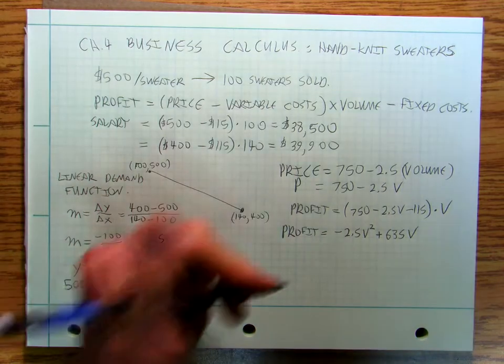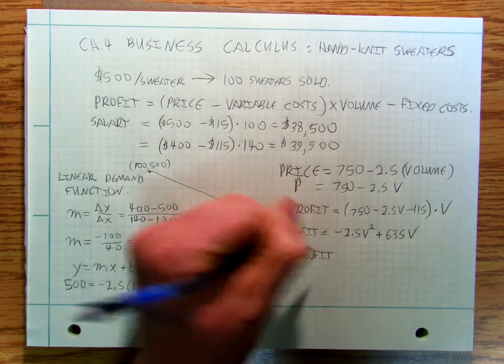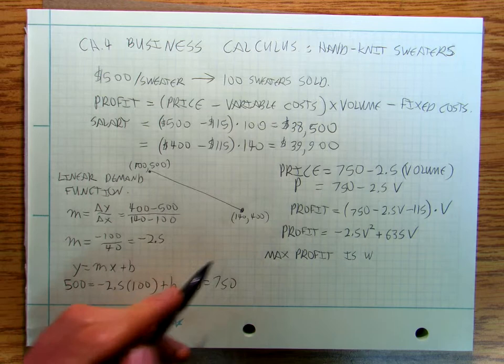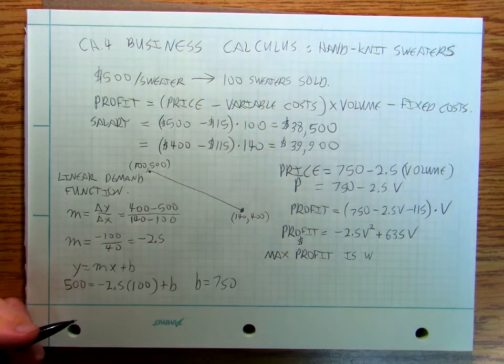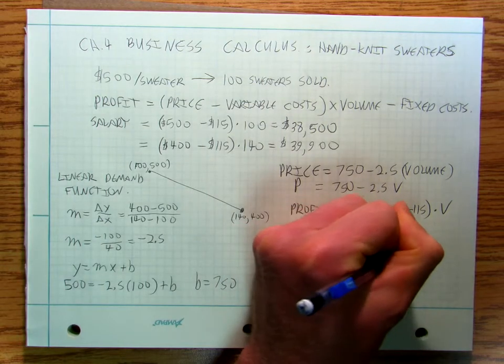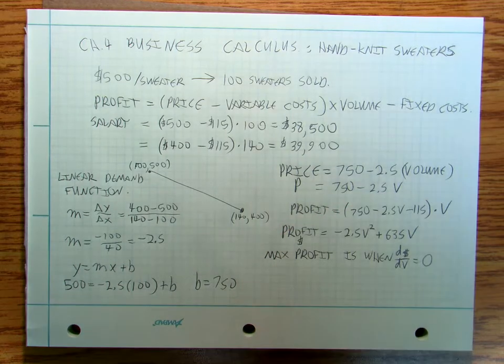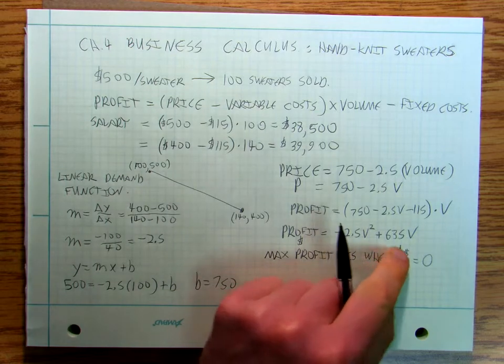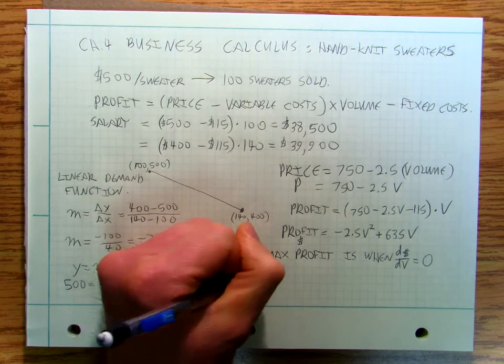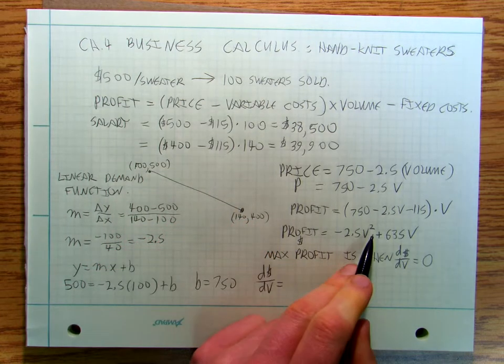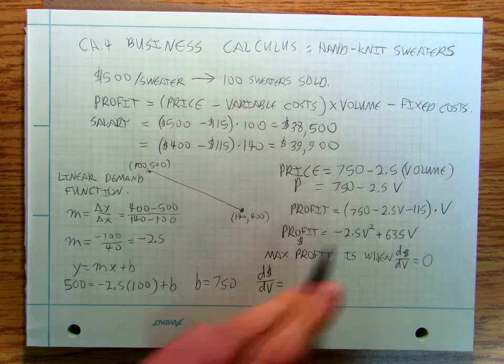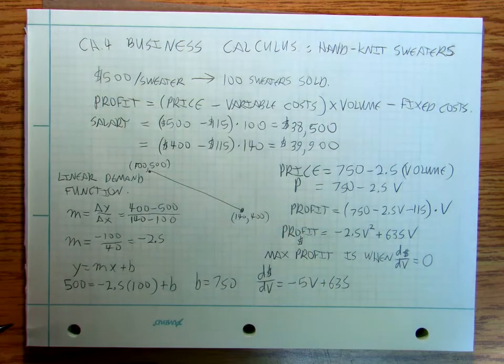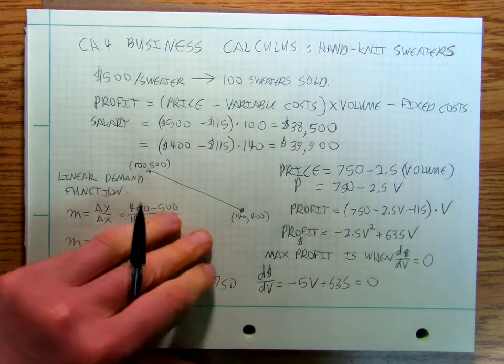I've already used P for price, I don't know what to use for profit, let's put dollar sign. My maximum profit is when the derivative of the profit divided by the derivative of the profit with respect to volume equals zero. So I take d dollar sign dV, that's going to be the derivative of this function, so it's going to be 2 times negative 2.5, so that's negative 5V plus 635, and I want to set that equal to zero.